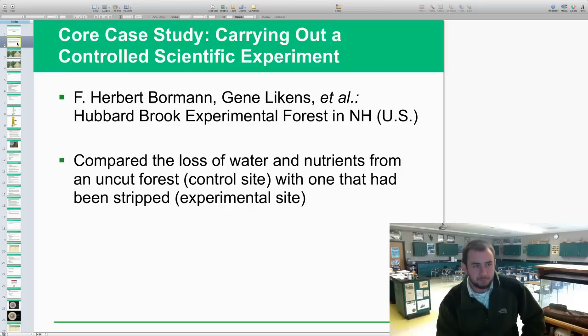Let's take a look at it first. We start with our core case study, which is called Carrying Out a Controlled Scientific Experiment. This is on page 28 of your textbook. Herbert Borman and Jean Likens, with a bunch of other people who helped them, surveyed the Hubbard Brook Experimental Forest in New Hampshire. What they did basically was they had two different areas and they measured the water quality and different things about the habitat before, and then they went ahead and clear cut at a different site.